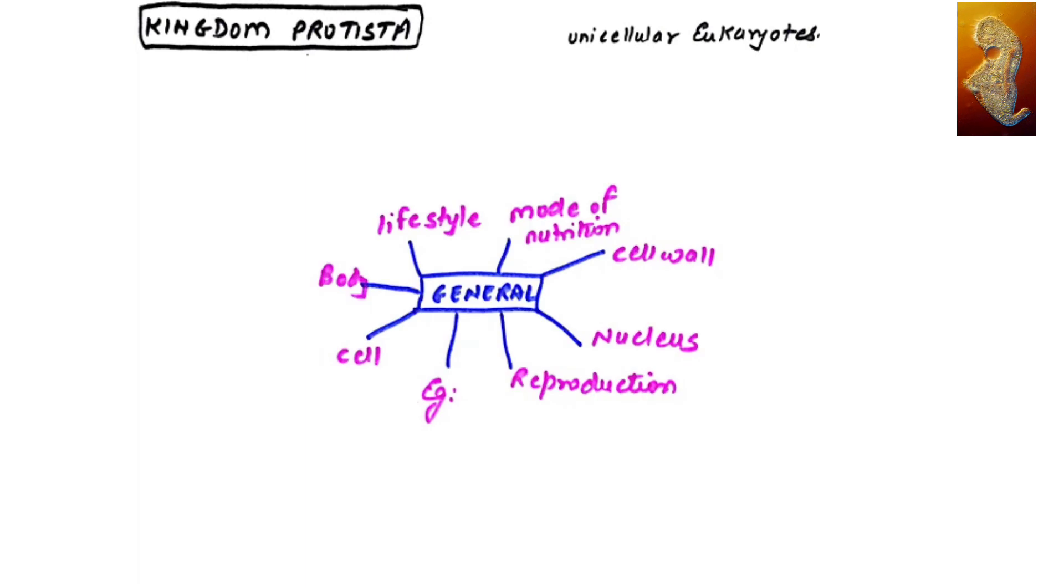Let's understand the general characteristics of Kingdom Protista. First of all, we need to talk about cells. So we say all are eukaryotes. Eu means true, karyo means nucleus. So these are those organisms which include well-developed nucleus.